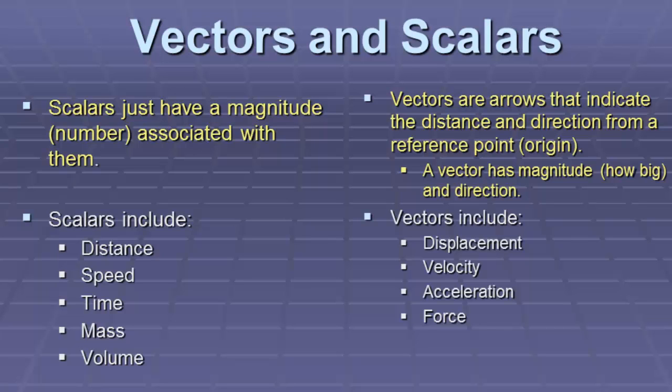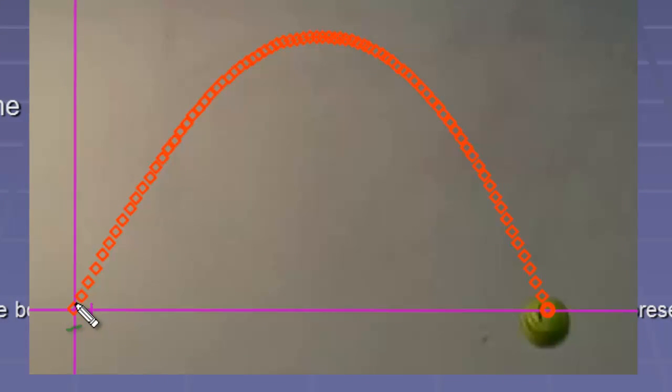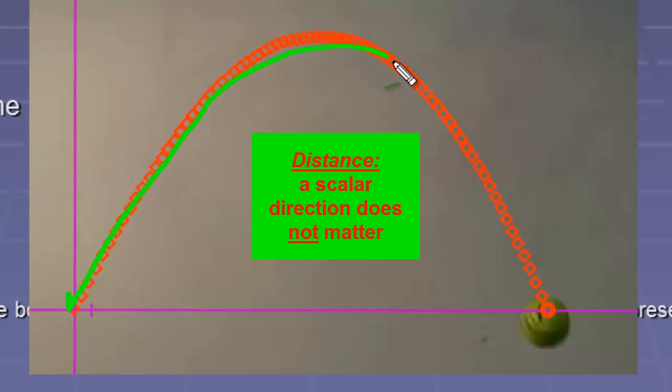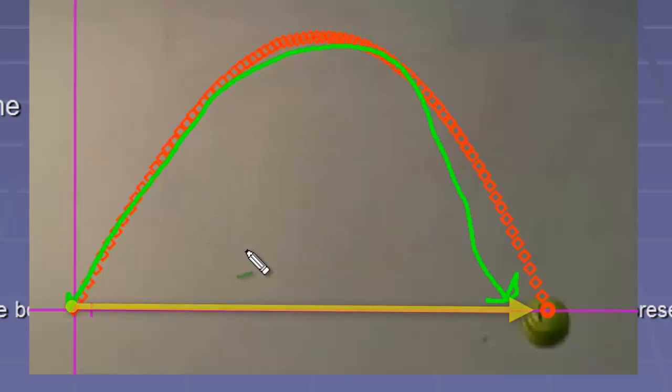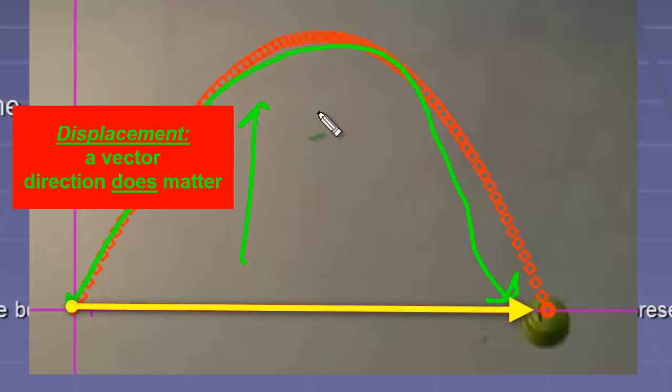If we go back and look at that picture, the scalar quantity was going up and down, and we didn't really care that it went up and down. That's called distance. The vector quantity is displacement, and it cared that it went up, and that it was a positive direction, and that it went down, and that it was a negative direction, and they both cancelled.